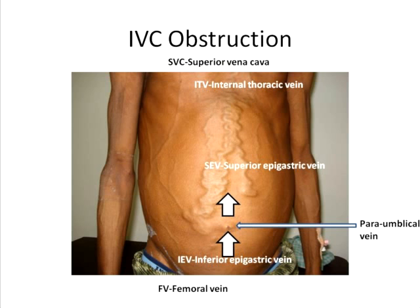In patients with IVC obstruction, blood has to ultimately drain through the superior vena cava. When there is IVC obstruction, the blood takes the route of the femoral vein, then the inferior epigastric vein, then the superior epigastric vein, the internal thoracic vein, and the superior vena cava. Therefore, the direction of blood flow will be from below upwards, both above and below the umbilicus.